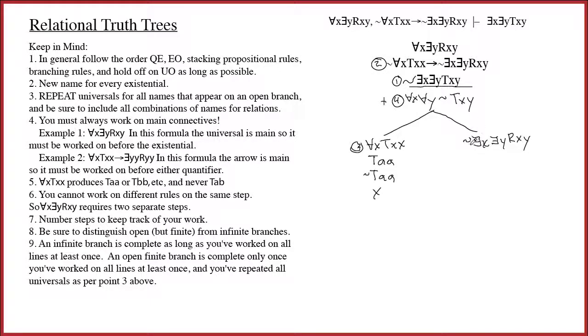All right, so now I look at this formula, and notice I've got not there is an X, there is a Y, Rxy, and so it's going to turn into a pair of universals, not Rxy, and that was step number five. Now, again, I've got a choice. I've got universals here, universal there, and some universals here.